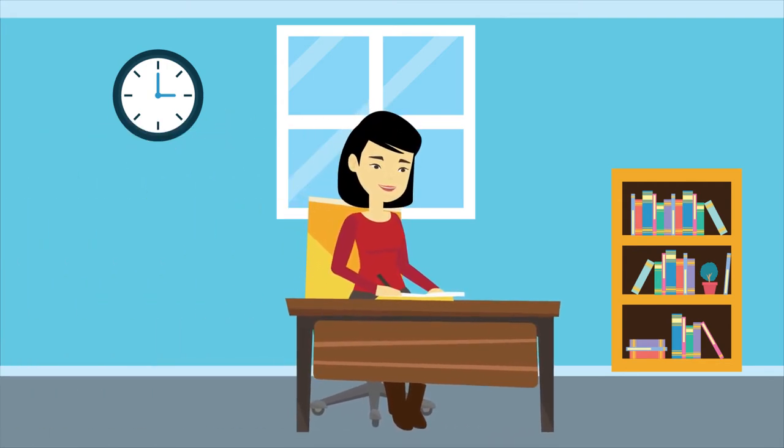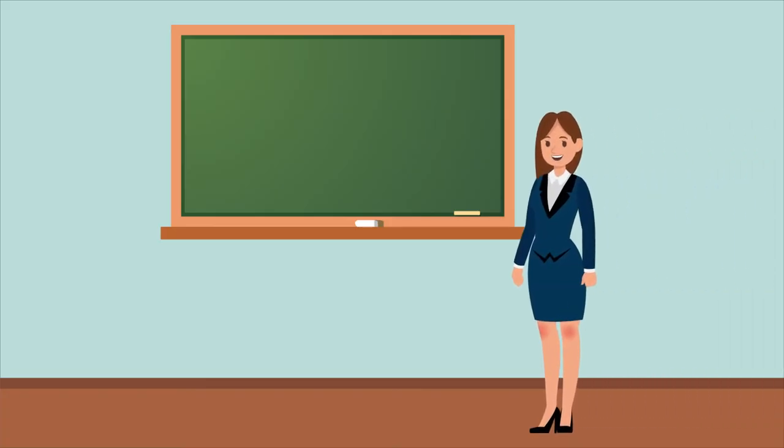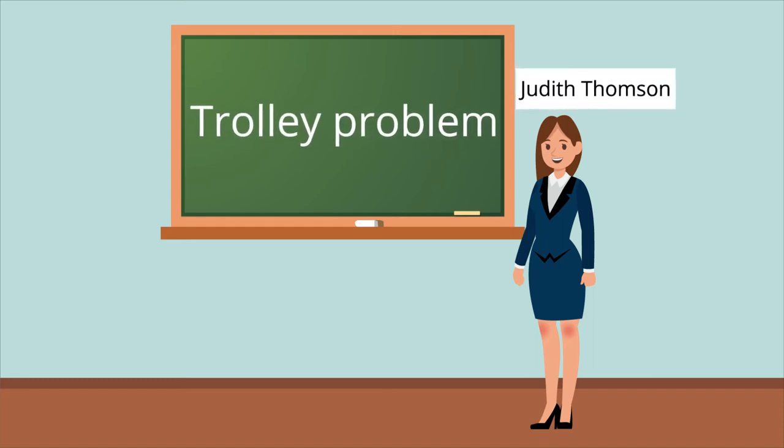A version of the trolley problem first appeared in 1967 in philosopher Philippa Foote's paper about the morality of abortion. A few years later, MIT professor of philosophy Judith Thompson refined the thought experiment and dubbed it the trolley problem.